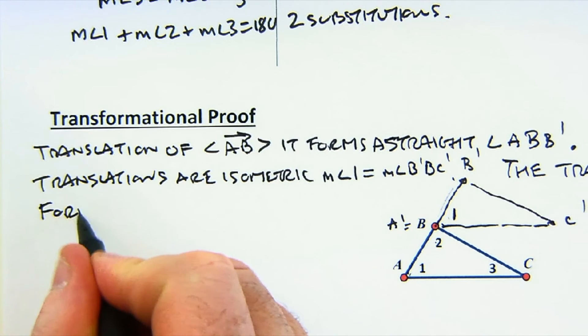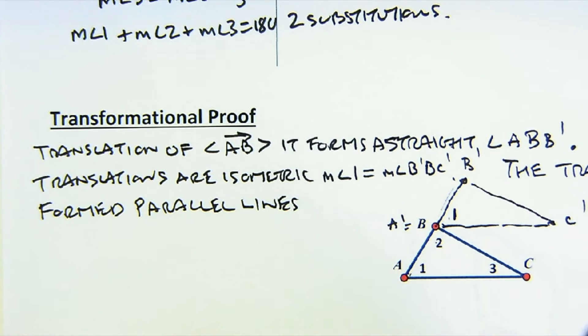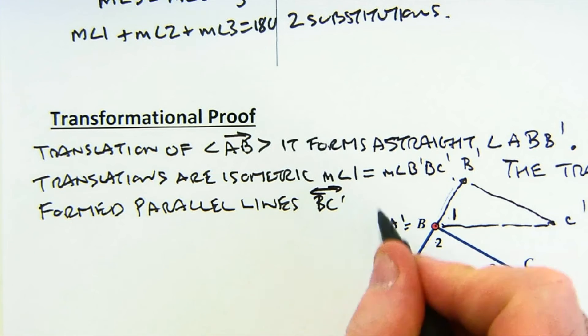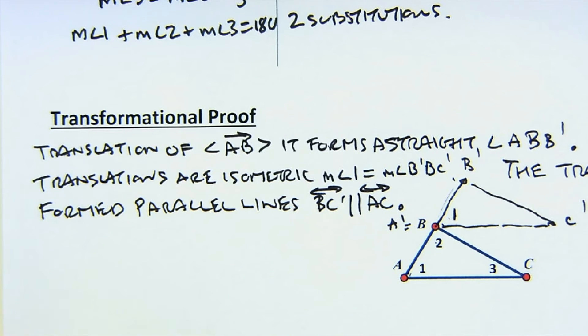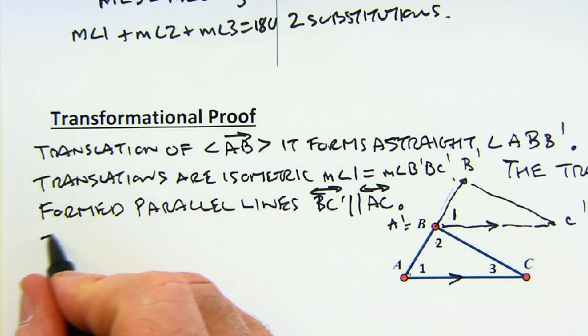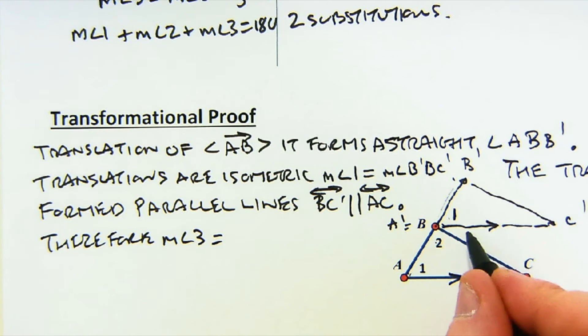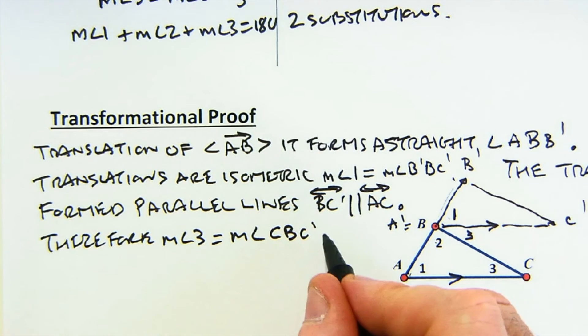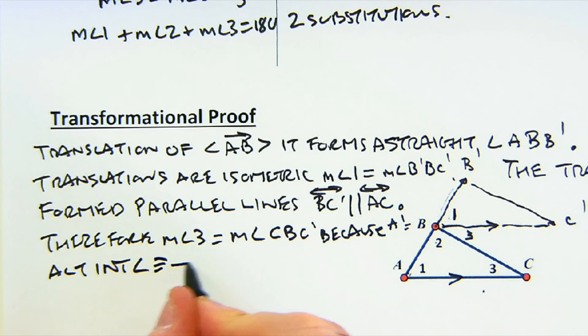And I'm going to use the fact that the translation formed parallel lines—B, B prime, C parallel to A, C. We know that all translations, when they are completed, that the original side is parallel to the image. And this is going to allow me to use my nice little fact that, therefore, the measure of angle three is the same as the measure of C, B, C prime, because alternate interior angles are congruent with parallel lines.